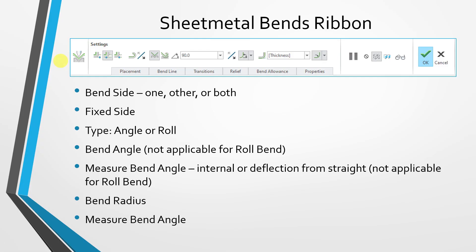Let's take a look at some of the different options in the ribbon. This first group of icons allows you to choose the bend side — whether the bend side is going to be on one side of the bend line, the other side of the bend line, or about both sides of the bend line.